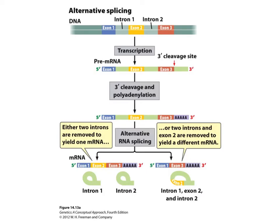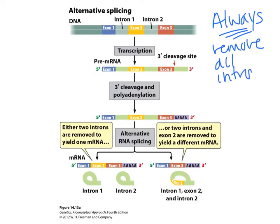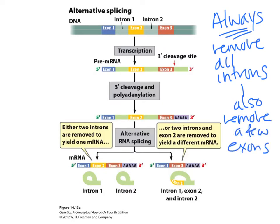Alternative splicing is when we do not include all of the exons in our RNA. We always remove all introns — that's regular splicing. But we could also remove a few exons. So if you're asked on an exam: what does splicing do? It removes the introns, not the exons. You have to have the word 'alternative' or 'alternate' splicing to call it something that could remove exons.